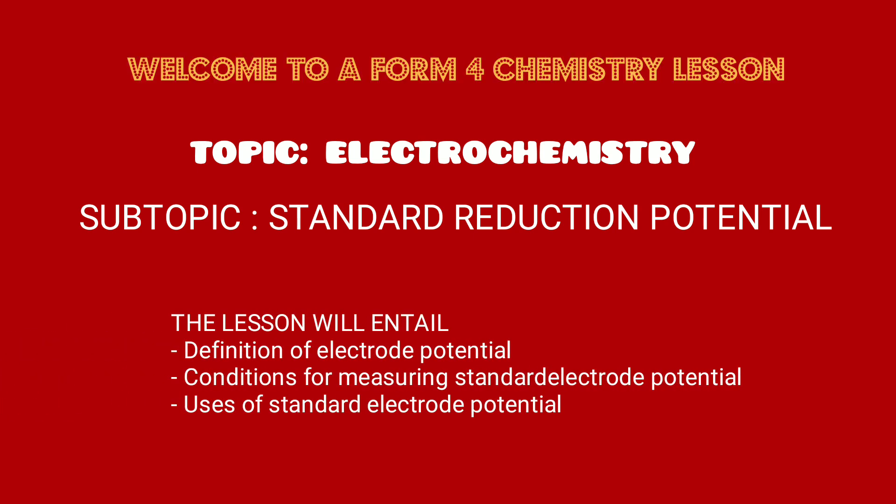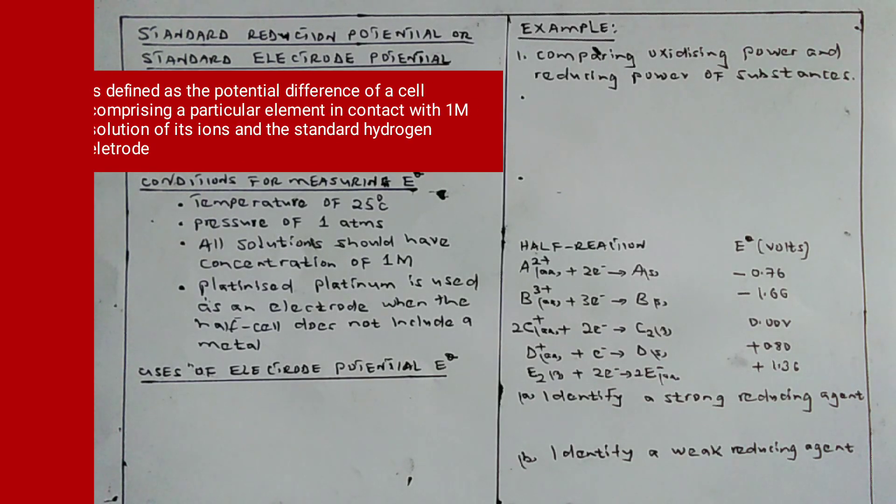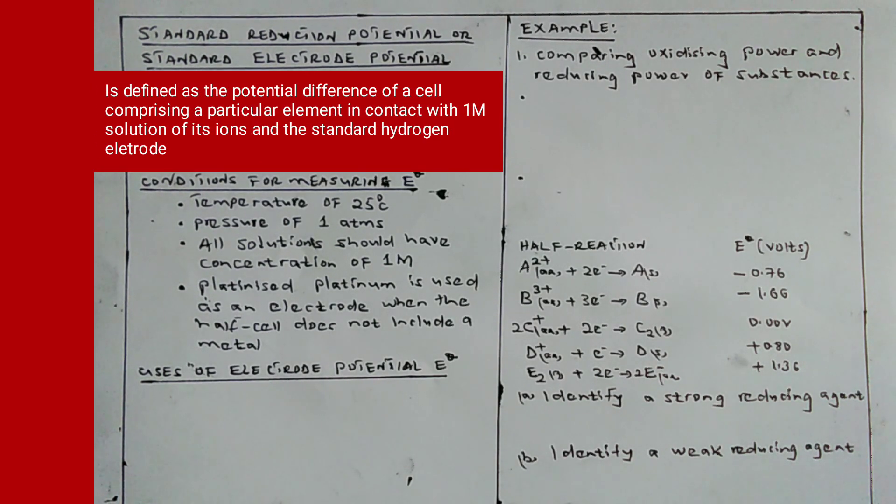We first begin by defining the term standard reduction potential, denoted by E0. This is defined as the potential difference of a cell comprising a particular element in contact with 1M solution of its ions and the standard hydrogen electrode.